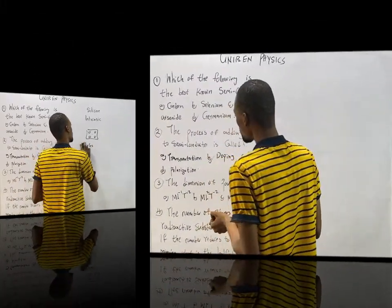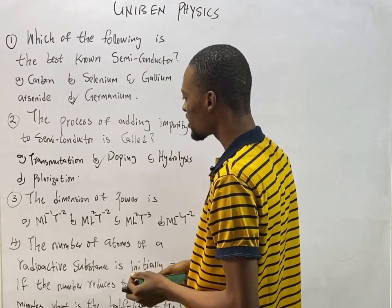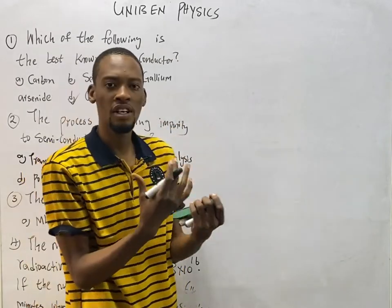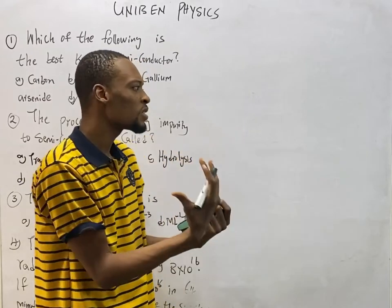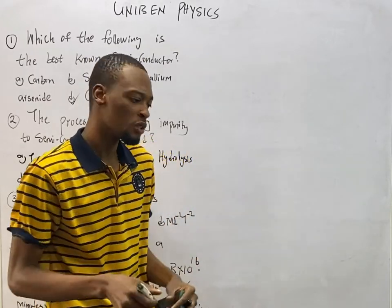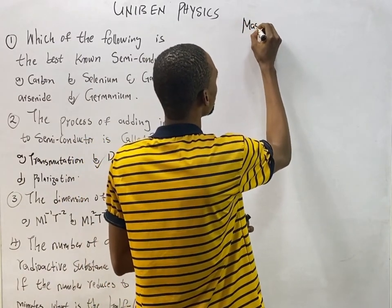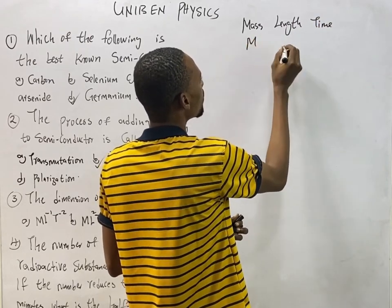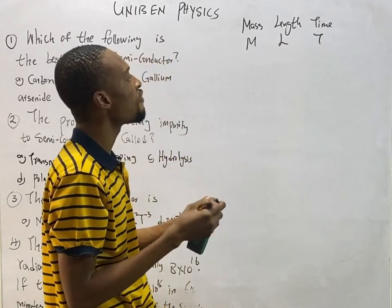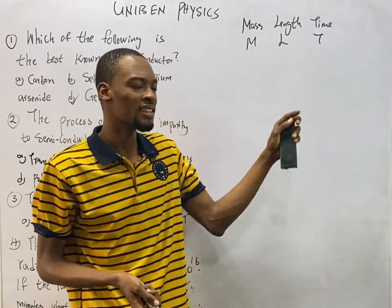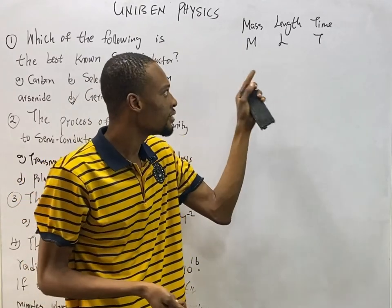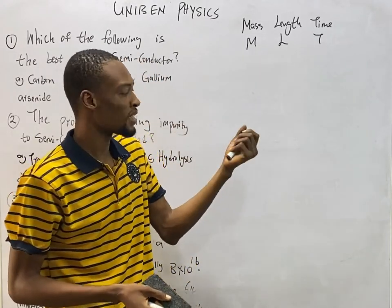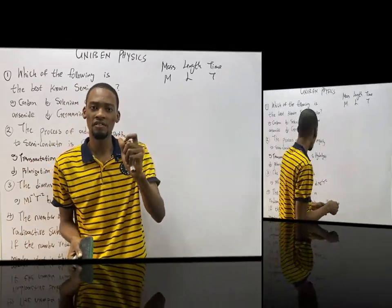The third question asks for the dimension of power. In physics, we have fundamental quantities and derived quantities. Fundamental quantities are independent of any other quantities — examples include mass, length, and time. The dimension for mass is M, length is L, and time is T. Other quantities like current and amount of substance are also fundamental.